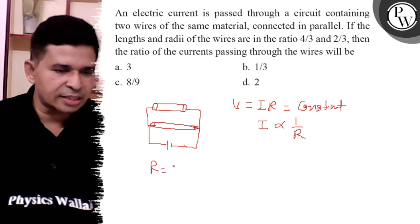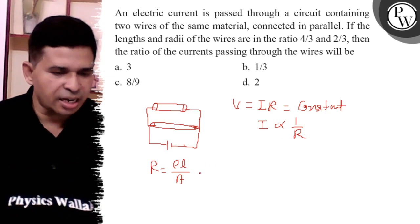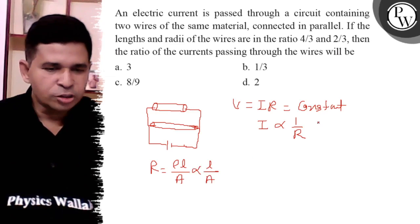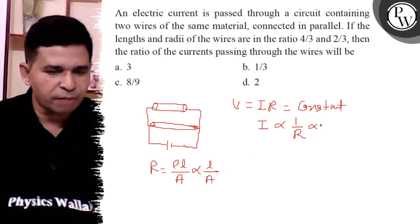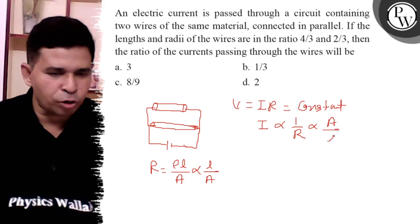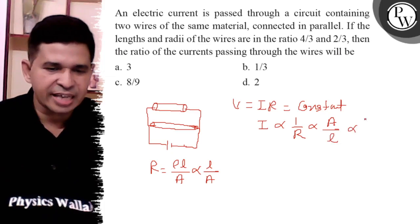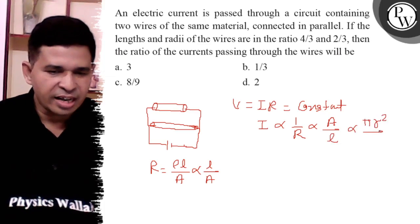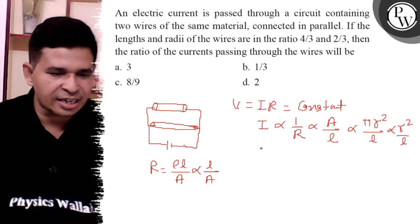But resistance is rho L upon area. So it is directly proportional to the length and inversely proportional to the area. I is proportional to 1 by R and area upon length. What is the area? It is pi R square. So I is directly proportional to radius square and inversely proportional to the length. It is the ratio of current.